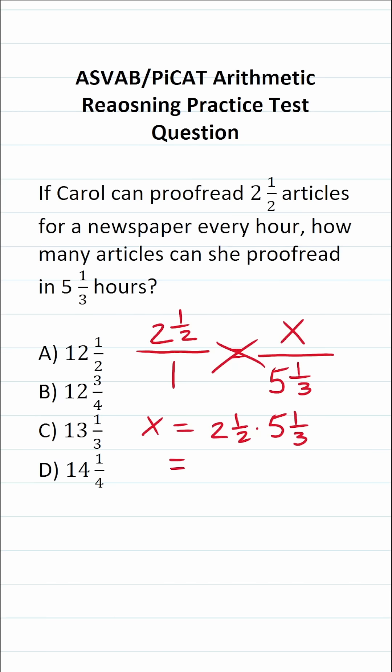Now, in order to do this multiplication, the first thing I want to do is convert these mixed numbers to improper fractions. To do that, I'm going to do two times two, which is four, plus one, which is five. And of course, we're going to place this over two. So two and a half is the same thing as five over two.